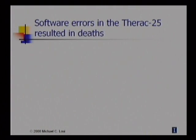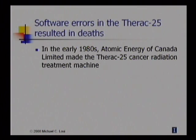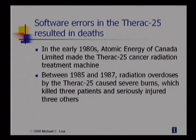Let me tell you another story that may illustrate the different meanings of responsibility. This is a case in which software errors in the Therac-25 machine resulted in deaths of patients. In the early 1980s, Atomic Energy of Canada Limited made the Therac-25 cancer radiation treatment machine that was used in several sites in the United States and Canada. Between 1985 and 1987, radiation overdoses by the Therac-25 caused severe burns in patients. These burns killed three patients and seriously injured three others.